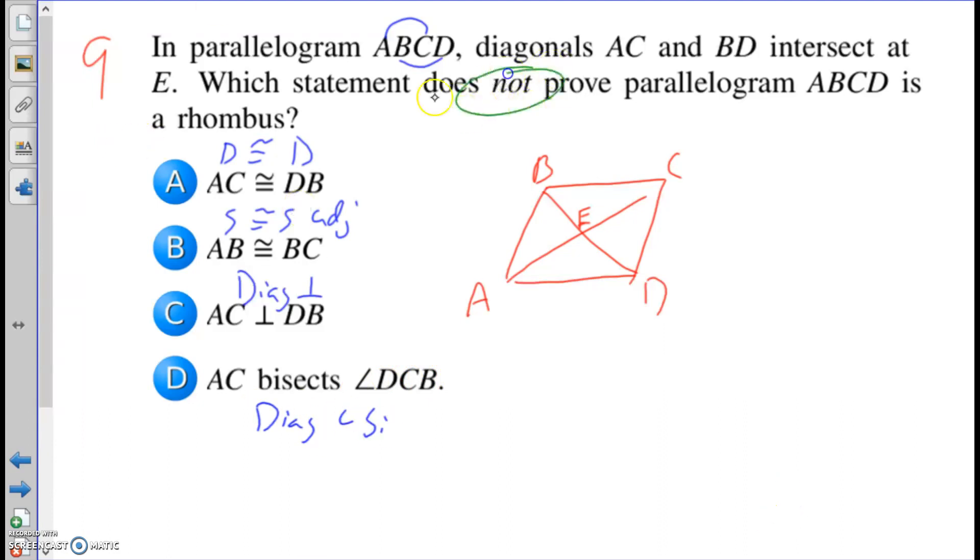So what does not prove a rhombus? Well, you have to think about the rhombus properties. For a rhombus the diagonals are perpendicular. So yes, this would prove a rhombus. All the sides are congruent, so if you could prove adjacent sides, because you already know opposite sides are congruent because it's a parallelogram. So since you know opposite sides are congruent, if you could show adjacent sides are congruent, like AB ≅ BC, that will prove this is a rhombus.